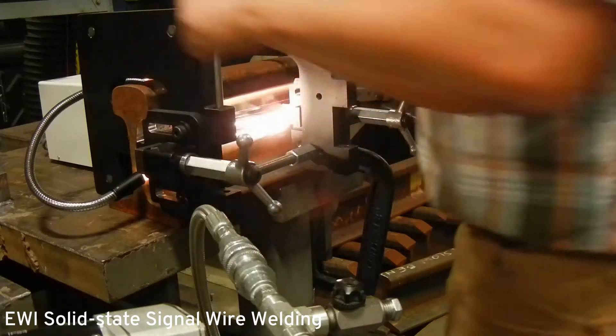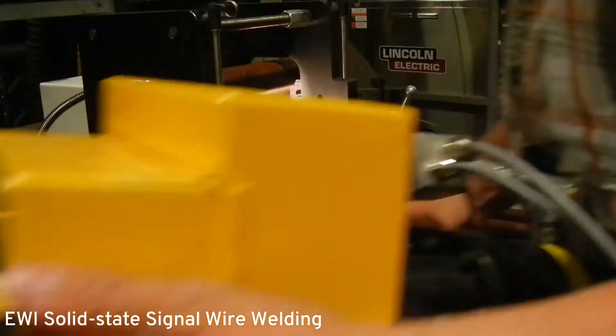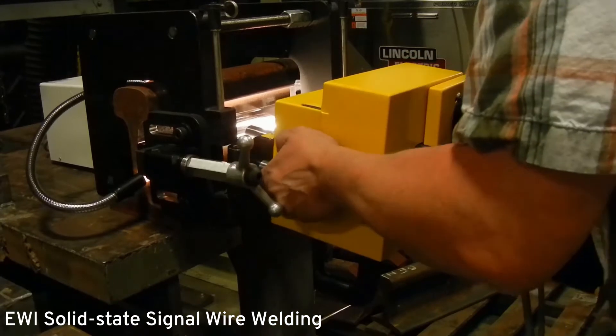So this is a demonstration weld of our signal wire attachment process. You can see here that the rail clamp has already been placed on the rail.